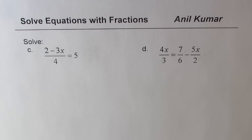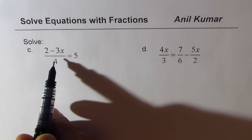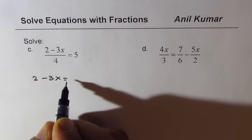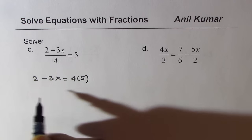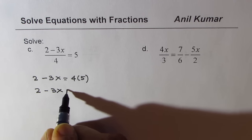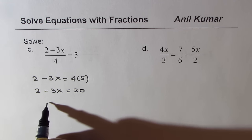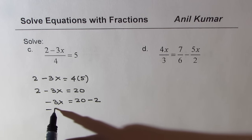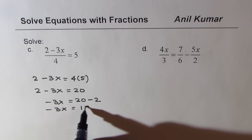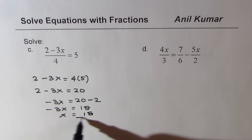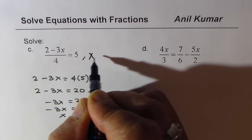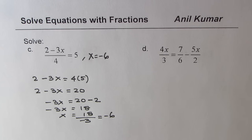We have another similar kind of equation, and here we'll apply cross multiplication. We can write this as 2 - 3x = 4 times 5, so 2 - 3x = 20, then -3x = 20 - 2 = 18, so x = 18 / (-3), which is -6.